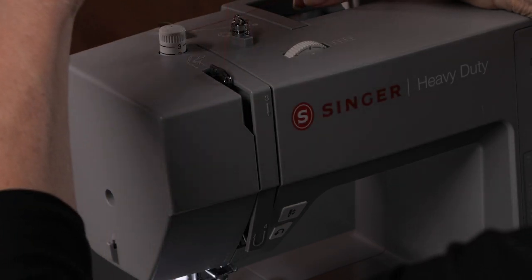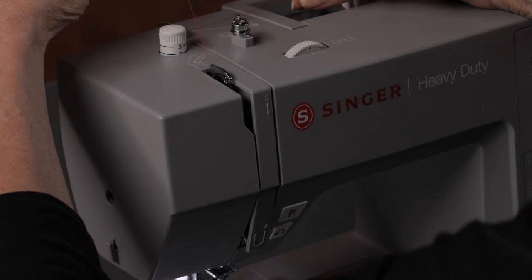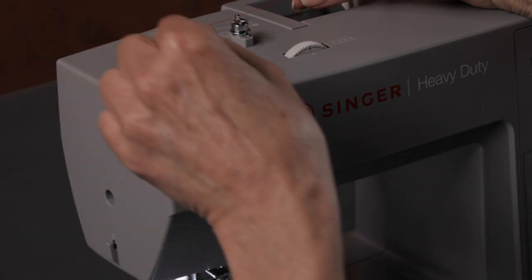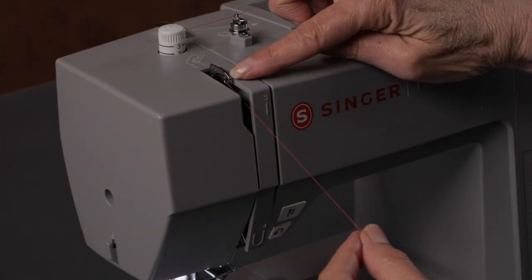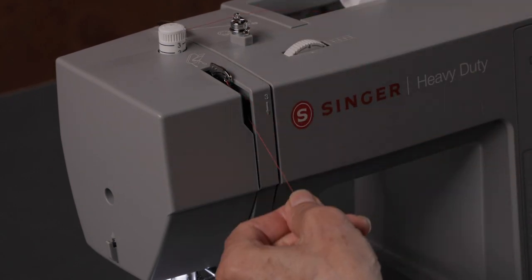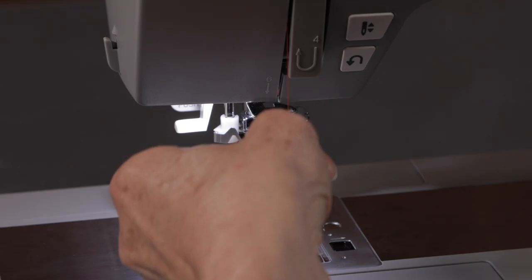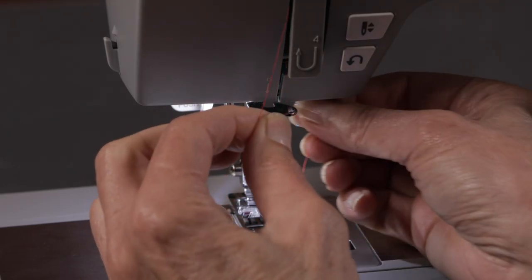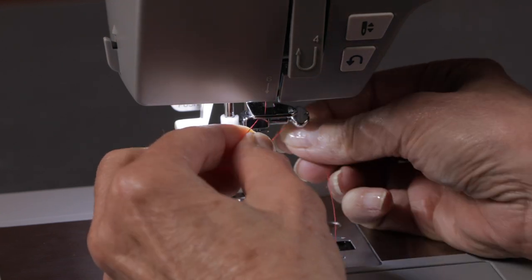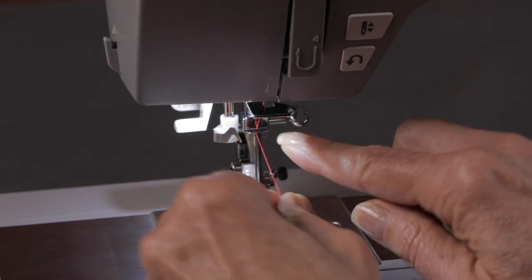Come up to the right of the take-up lever, bring it over to the left, and then bring it forward again until the thread slips into the eye of the take-up lever. Bring the thread down to the needle area. Now bring the thread behind this first thread guide, and then behind this second thread guide just above the needle.